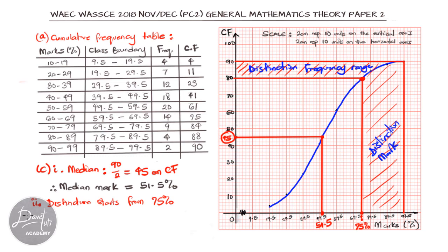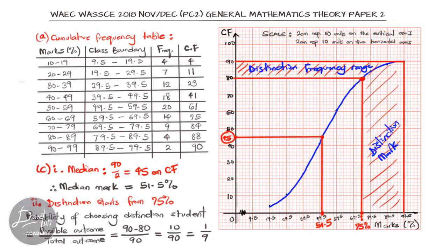We also find the probability that a student selected at random would have scored a distinction mark. We know that the definition of probability is our desired outcome divided by the total possible outcome. So probability of choosing a distinction student is the possible outcome, which is our desired outcome here, divided by the total of the possible outcome. Our possible outcome will be the difference between 90 and 80. That's (90 - 80) over 90, and solving that we get it as 10/90 = 1/9. That is the probability of picking a student that scored distinction.